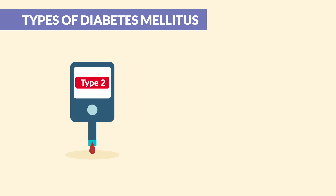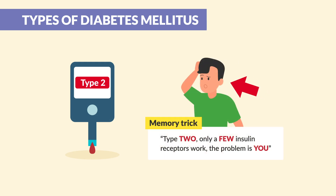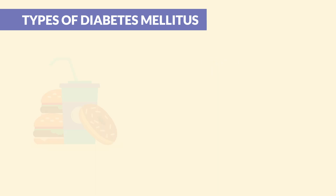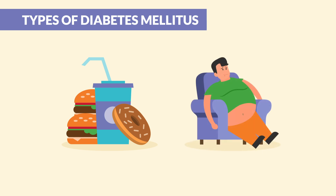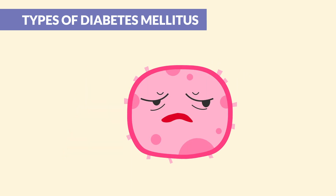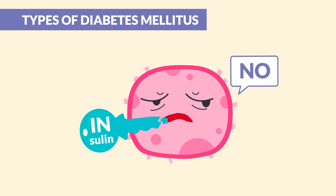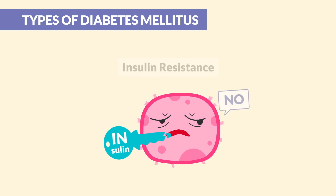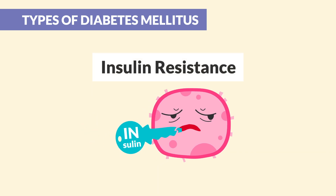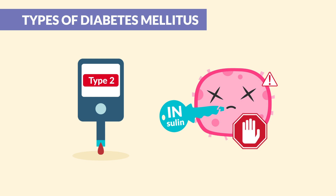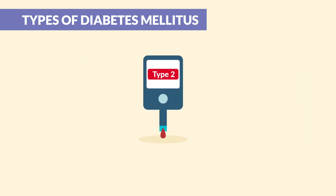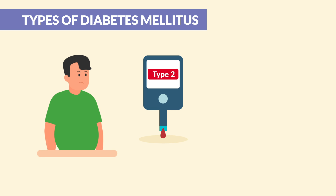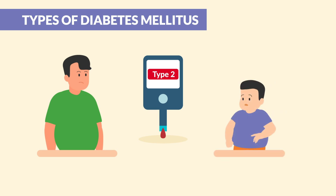In type 2, we have few insulin receptors that are working, since the problem is you. Your diet and sedentary lifestyle eventually leads to obesity and insulin resistance. Cells become lazy and overused, and the insulin receptor sites are like an overused keyhole that wears out and just ignores the insulin — this is called insulin resistance. Simply think: in type 2, the cells are through; they quit responding to the insulin. Type 2 most commonly develops in adults, but rising obesity rates means we're seeing more and more children with type 2 diabetes.